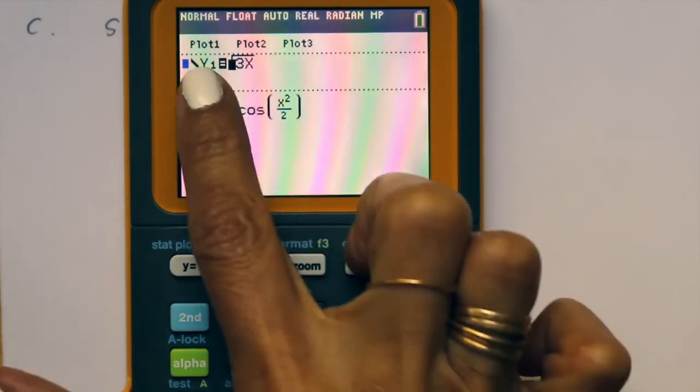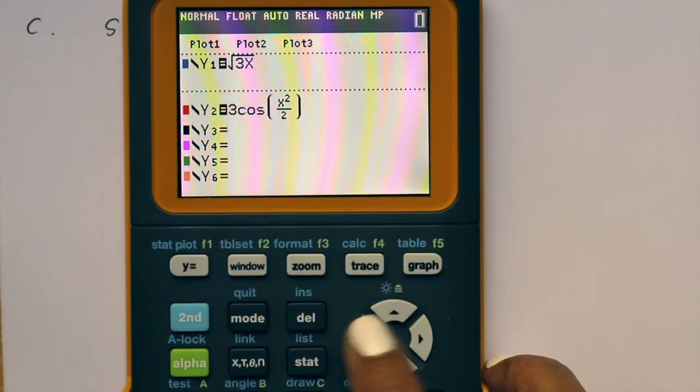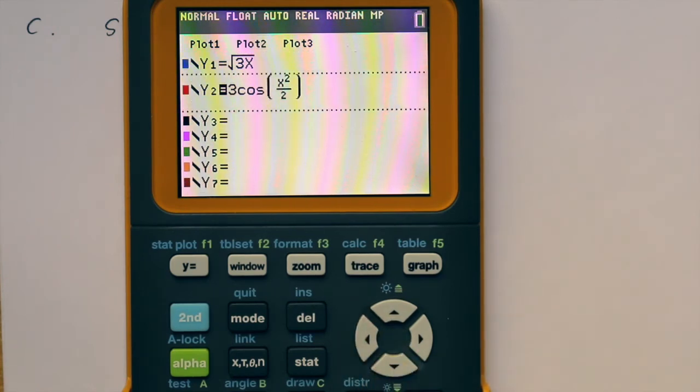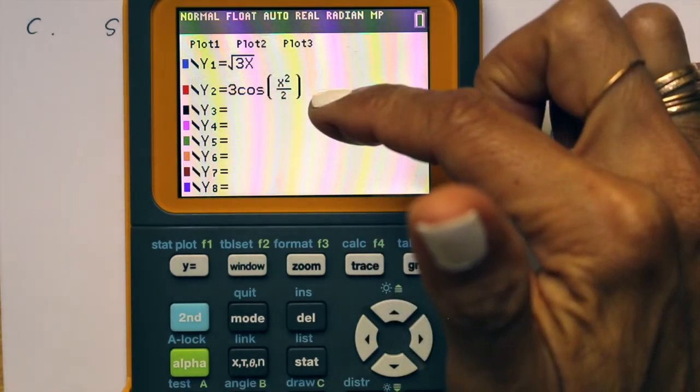I pressed y equals, and right now we have y1 is our dx/dt, y2 is our dy/dt. What I'm going to do is arrow over and get the cursor on the equal sign and press enter. That unhighlights the equal sign. I'm going to do the same thing for y2. If I were to hit graph, those will not show up now on the graph.